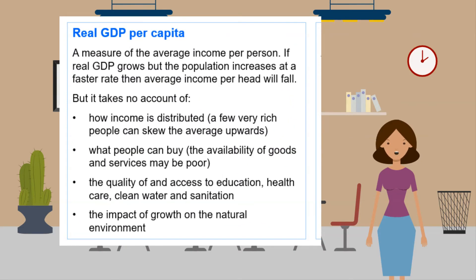Real GDP per capita is a measure of the average income per person. If real GDP grows but the population increases at a faster rate, average income per head will fall. However, it takes no account of how income is distributed — a few very rich people can skew the average upwards. It also doesn't capture what people can buy, the availability of goods and services, or the quality of access to education, healthcare, clean water and sanitation.